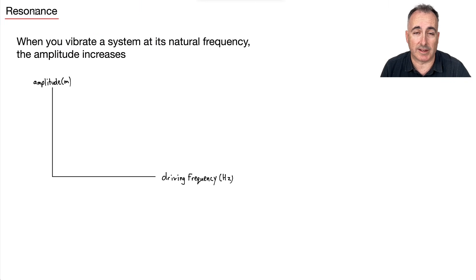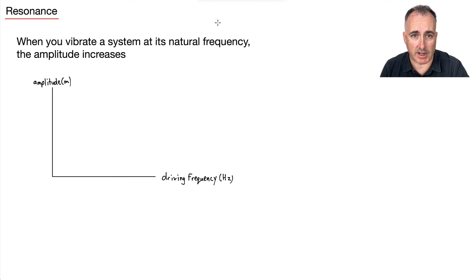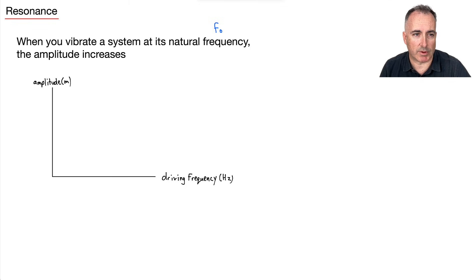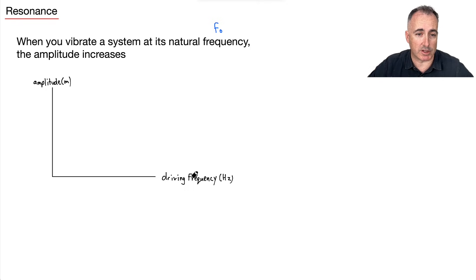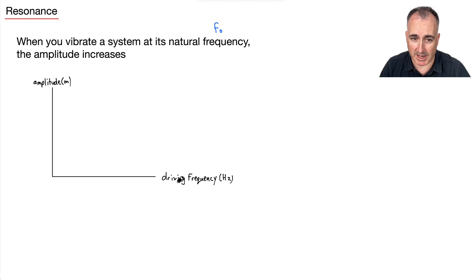So let's look now at resonance. When you vibrate a system at its natural frequency — which we just talked about, F0 — then the amplitude will increase. We've got the amplitude of a system and what's called the driving frequency. This could be like you're hitting something at — what's the frequency at which you're hitting it? We're going to say driving, because you're hitting it, or vibrating it, or making it move artificially, so to speak.